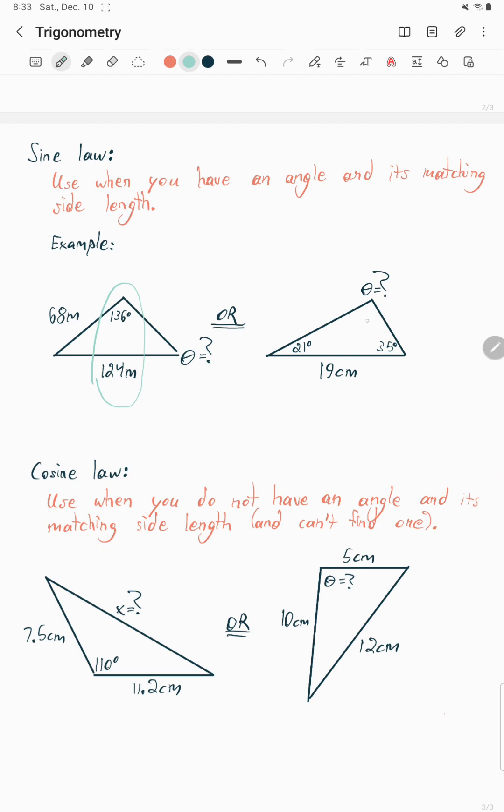we don't have the matching side length of 19 centimeters, but we can find it. 180 degrees minus 21 degrees minus 35 degrees is 124 degrees. We're good to go. That's sine law there.